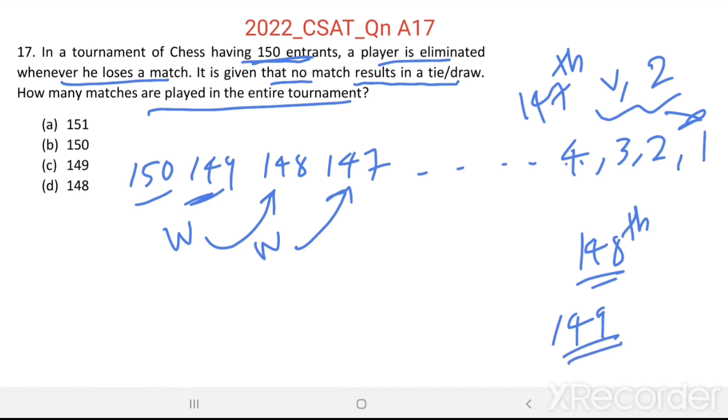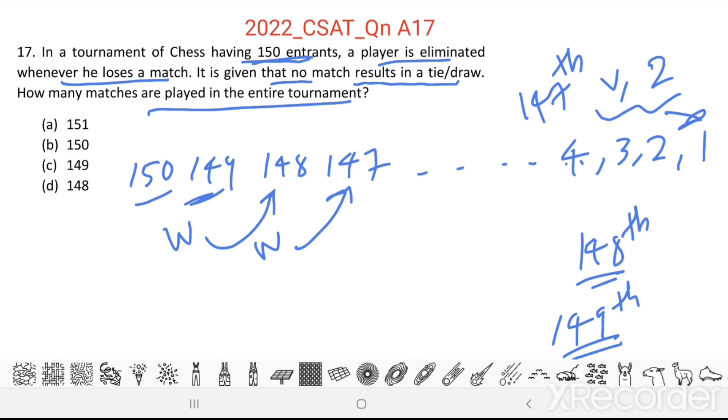So in the 149th match, 149th people will get eliminated. The last one will be the champion in the tournament.